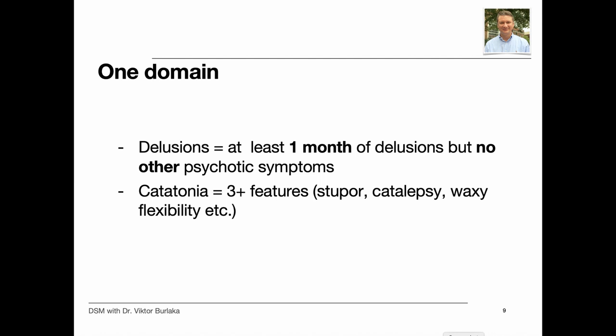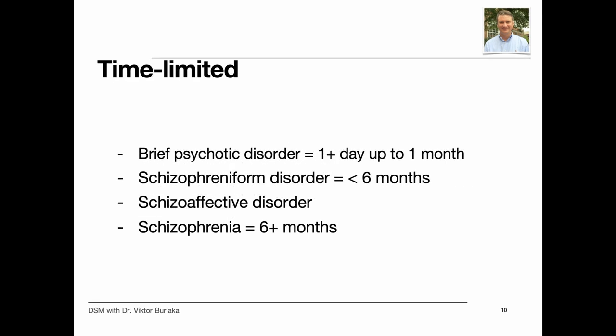Two conditions are defined by abnormalities limited to one domain of psychosis — delusions or catatonia. Delusional disorder is characterized by at least one month of delusions but no other psychotic symptoms. Catatonia is defined by the presence of three or more of 12 psychomotor features, such as stupor, catalepsy, waxy flexibility, and negativism. Brief psychotic disorder lasts more than one day and remits by one month. Schizophreniform disorder closely resembles schizophrenia but is distinguished by duration — the episode lasts between one and six months, after which the individual may or may not recover.